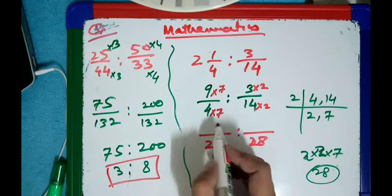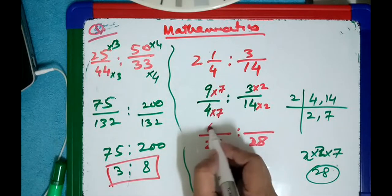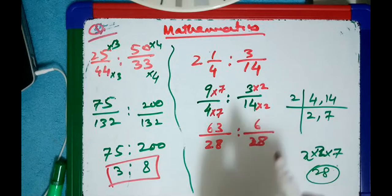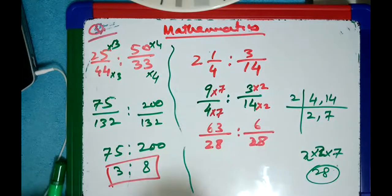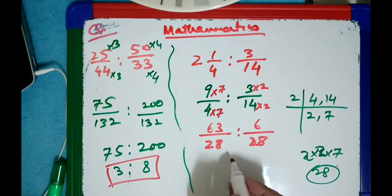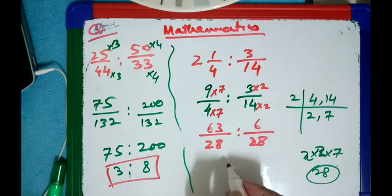And this one is 9 × 7 = 63, and 3 × 2 = 6. So finally, what will be the next step? Can you tell me? We multiply — we multiply 28 on both. So 28 will be cancelled. Then the next one will be 63 ratio 6.